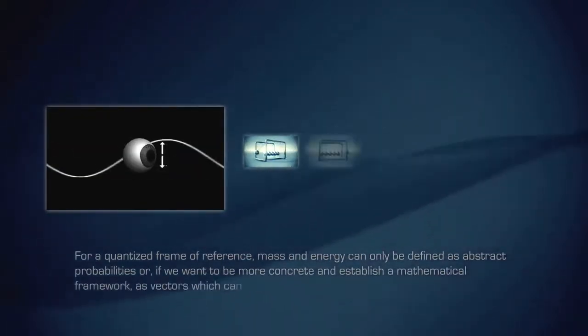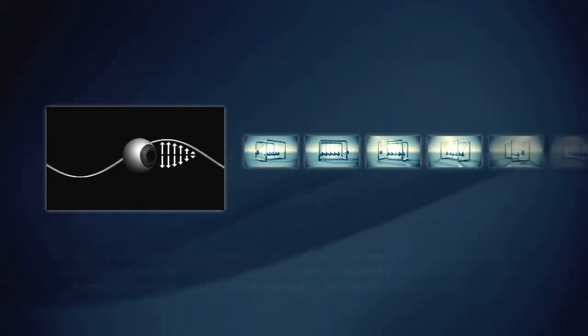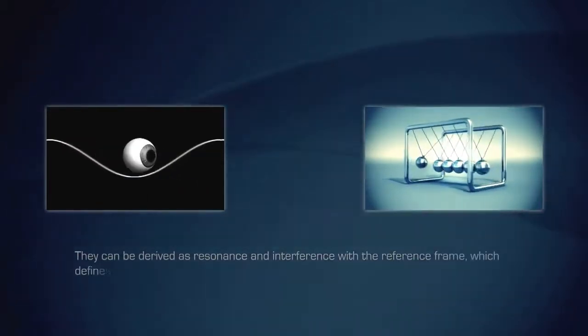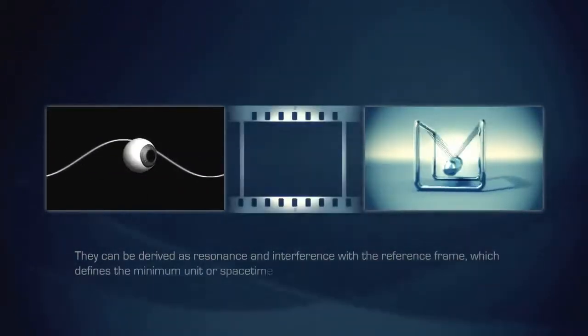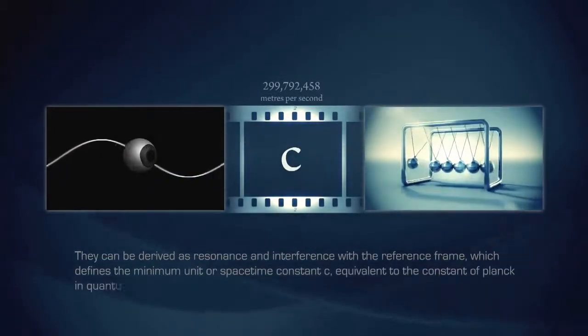or if we want to be more concrete and establish a mathematical framework, as vectors which can only exist when we assume an arrow of time. They can be derived as resonance and interference with the reference frame, which defines the minimum unit or spacetime constant C, equivalent to the constant of Planck in quantum mechanics.